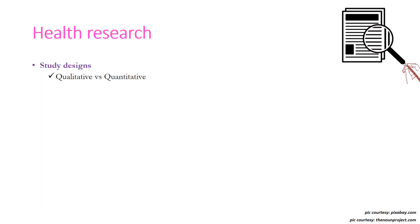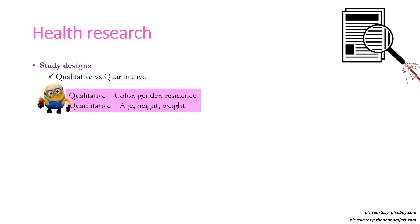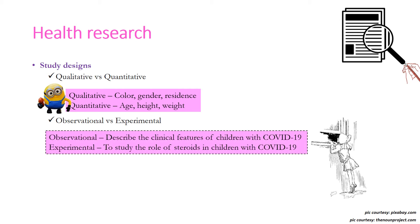There are some study designs mentioned in this BCBR chapter. First is qualitative versus quantitative — these terms refer to the type of variable being tested. Qualitative is non-numerical, for example color can be red, blue, or yellow. Quantitative can be measured, for example age can be 10 months or 50 years. An observational study simply records or observes, while an experimental study analyzes or finds a relationship between two things. For example, describing clinical features of children with COVID-19 is observational, whereas studying the role of steroids in children with COVID-19 is experimental.